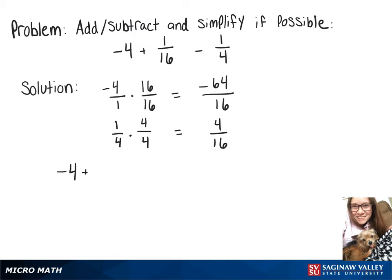And now we can take our original problem, and we can rewrite that as negative 64 over 16 plus 1 over 16 minus 4 over 16.